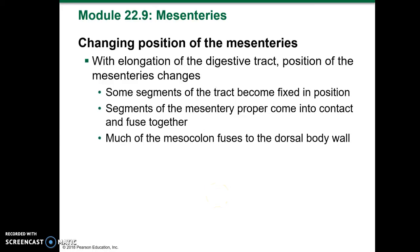The ventral mesentery becomes the lesser omentum, which connects the stomach to the liver and provides access for blood vessels and other structures entering and leaving the liver. The falciform ligament connects the liver to the anterior body wall. With the elongation of the digestive tract, the position of the mesenteries changes; some segments of the tract become fixed in position.